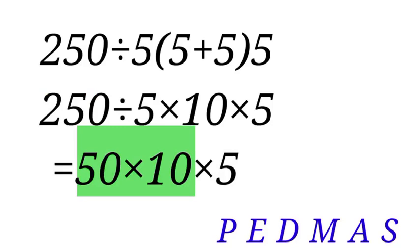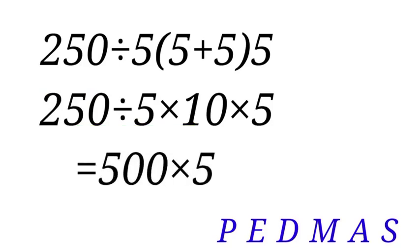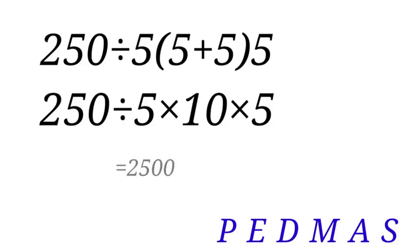So, 50 times 10 is 500. And then, 500 times 5 is 2500. So our final answer here is 2500.